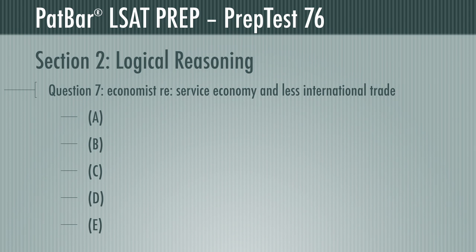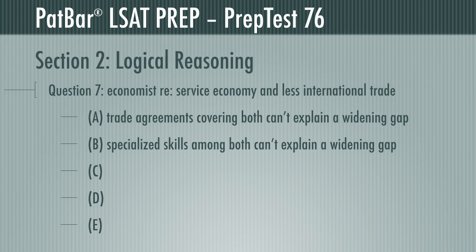Question 7 presents an economist summarizing that, since our country's economy is increasingly service-based, international trade continues to decrease. You need to find which answer, if true, most helps support that decrease. Trade agreements covering both goods and services, and specialized skills among people working in both, would support exactly the opposite of a widening gap. A and B are wrong.